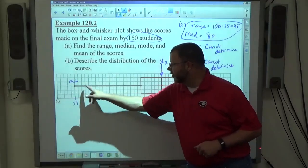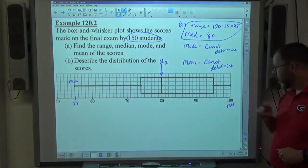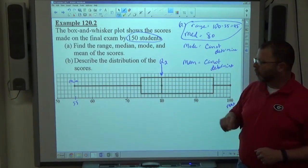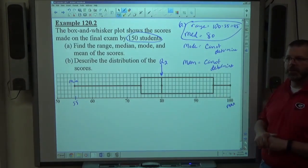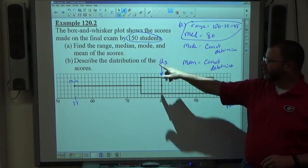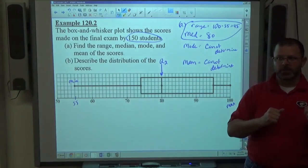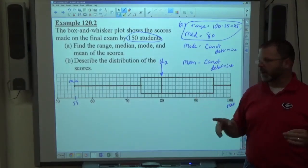25% of the scores lie between 55 and 74. 25% of the scores lie between 74 and 80. 25% of the scores lie between 80 and 95. And 25% of the scores lie between 95 and 100. When it says describe the distribution, that's how you do it. 25% lie between this and this.